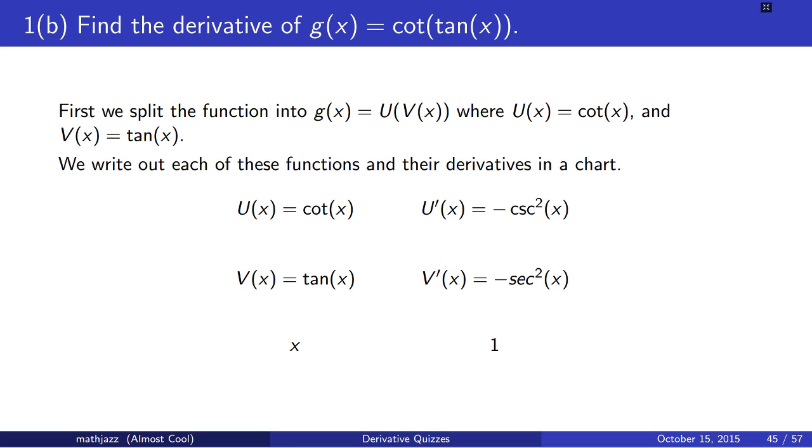1b. Find the derivative of g of x equals cotangent of tangent of x. Now, first we have to split this function into two functions, cotangent of x and tangent of x. And we make our columns, and we put the derivatives in the second column.